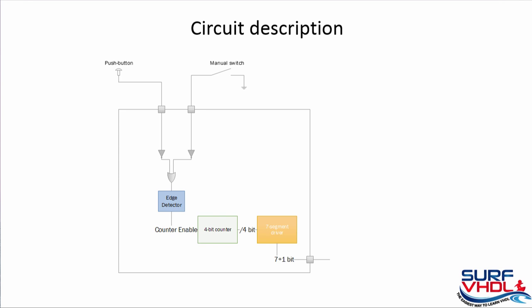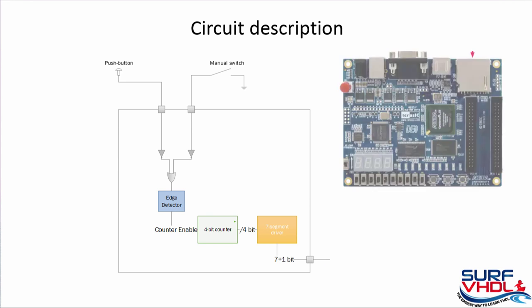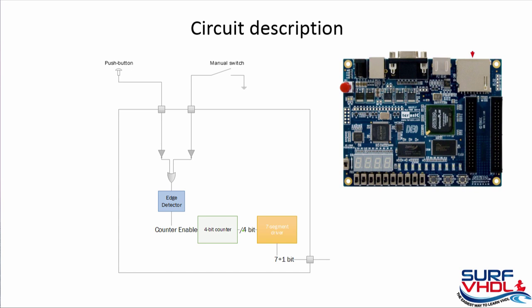Let's understand what the circuit we are going to implement into the board looks like. There is a button or switch connected to an edge detector that detects the rising edge of the pulse, which drives a 4-bit counter connected to a seven segment driver that drives the seven segment LED. The board is the DA0 board. This is the push button, and the manual switch is connected by connecting this point to ground.